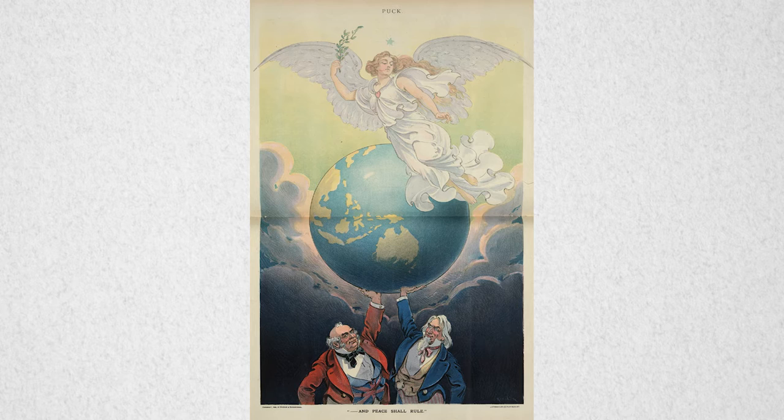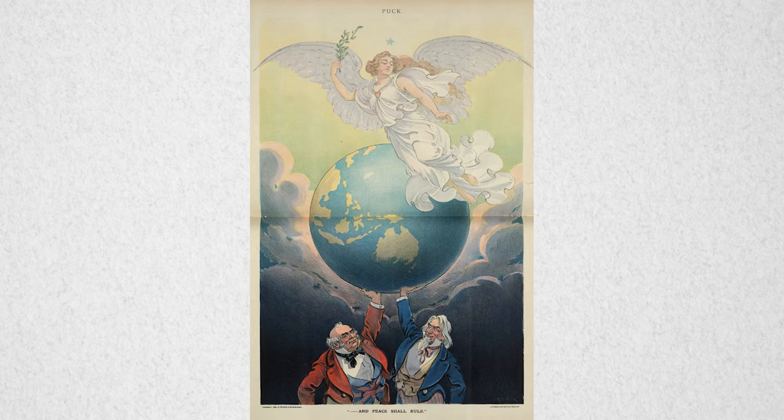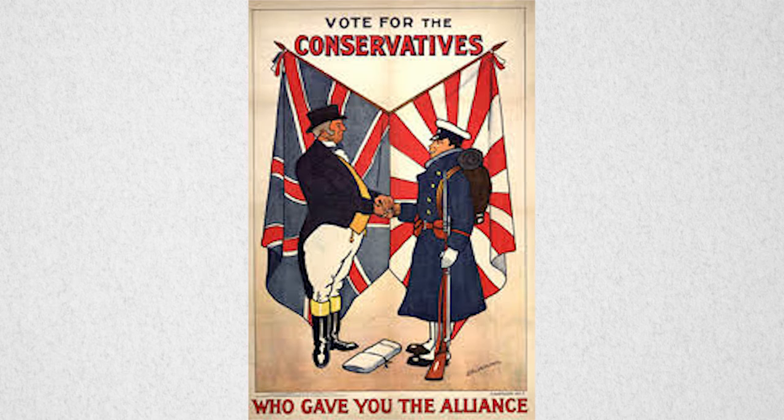By the end of the 19th century, we begin to see the special relationship develop between the British Empire and the United States, with Uncle Sam and John Bull hanging out a lot, bringing civilization to the darker-skinned peoples of the world.